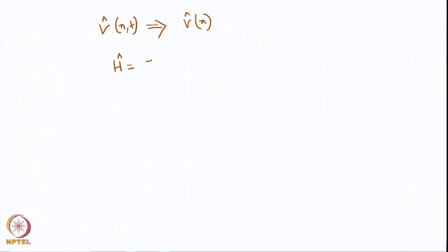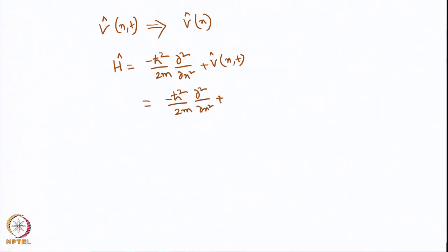Therefore, H — which was −ħ²/2m · d²/dx² + V(x,t) — can be written as −ħ²/2m · d²/dx² + V(x). The kinetic energy operator −ħ²/2m · d²/dx² has no time dependence, and similarly the potential energy also has no time dependence. Hence the Hamiltonian becomes time independent.